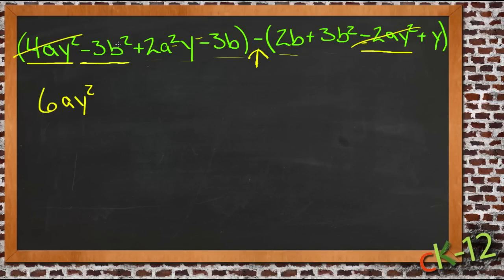Our next one is negative 3b squared. We have, nope, this is just a b, just a b, 3b squared. Here's another 3b squared right here.